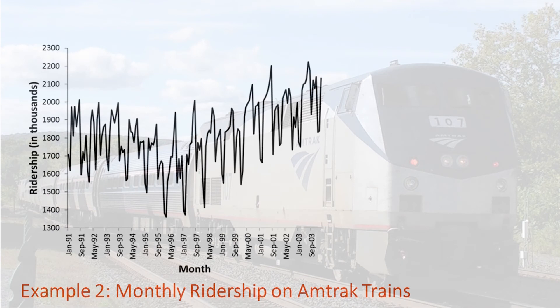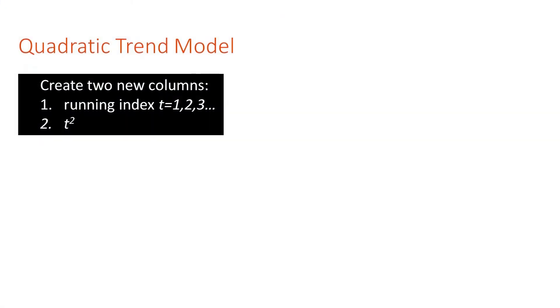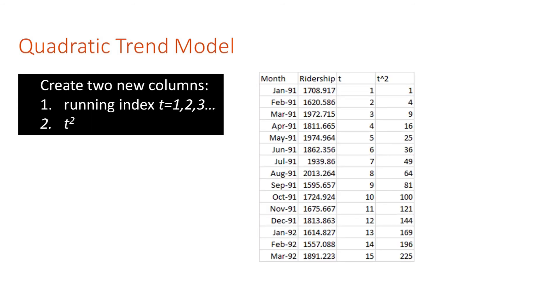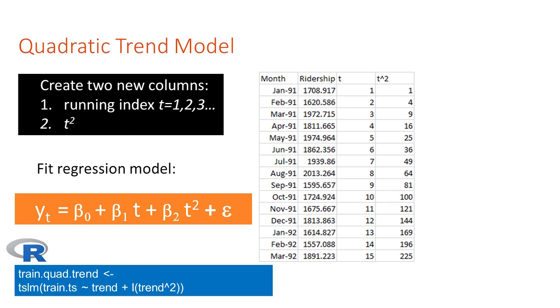To see another type of useful trend, a polynomial trend, let's return to the monthly ridership on Amtrak example. A quadratic trend is a specific type of a polynomial trend. It's often a good approximation for a time series. However, it's not as nicely interpretable as the linear and exponential trend models. To fit a quadratic model, we start by creating two new columns, t and t squared. Then we fit a regression model with these two predictors. If you're using R, you can specify a quadratic trend using the TSLM function with this notation.